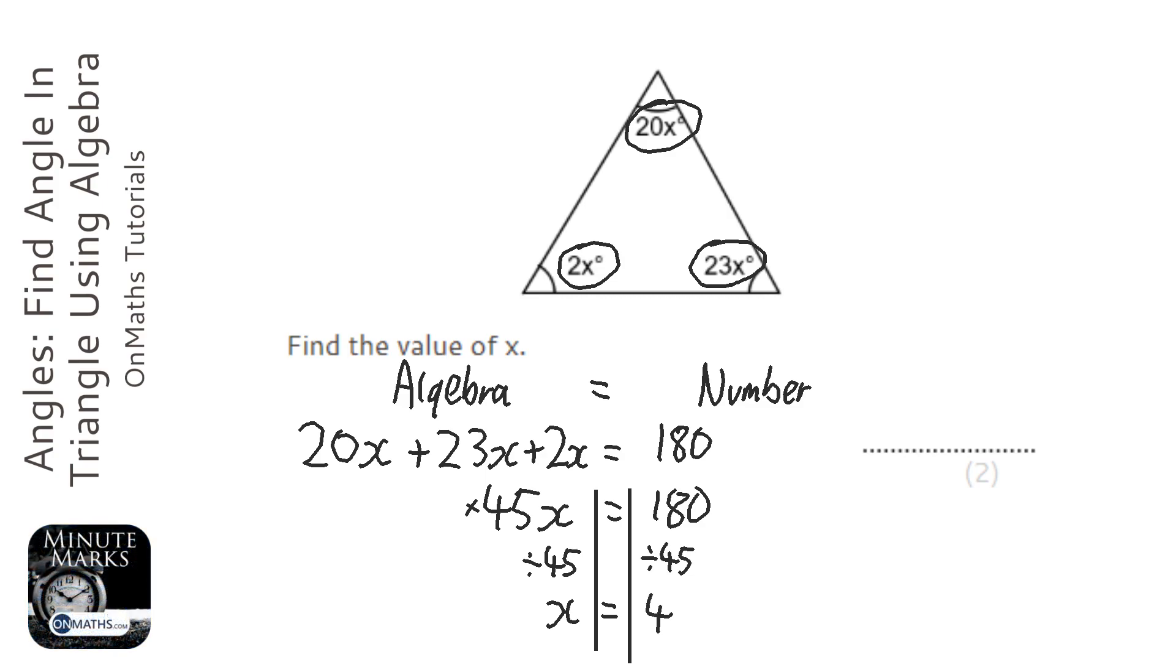So x equals 4. You can verify this by doing 20 times 4 plus 23 times 4 plus 2 times 4, and it should equal 180, which it does.